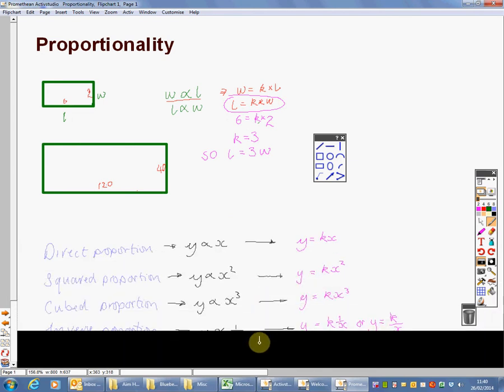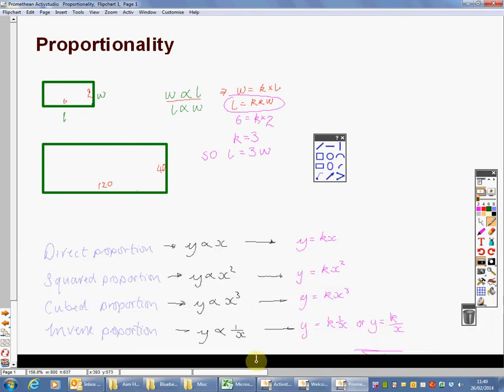In the higher paper, you may get four types of proportionality: direct, squared, cubed and inverse. And each time we can write that down in a mathematical way. This is Y is proportional to X, that is called direct proportion. In terms of a formula, Y will always be some number K times X.